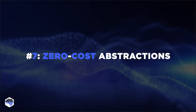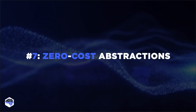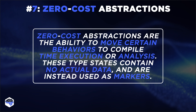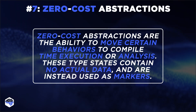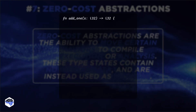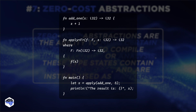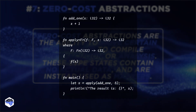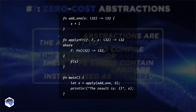Another important Rust feature is zero-cost abstractions, which allow for writing high-level abstractions without sacrificing performance. In Rust, the concept refers to the idea that high-level language constructs, such as generics and closures, incur no runtime overhead compared to lower-level counterparts. The apply function in the provided code demonstrates this concept — it accepts any function matching a specific signature without runtime cost, showcasing Rust's ability to optimize high-level constructs into efficient code execution.